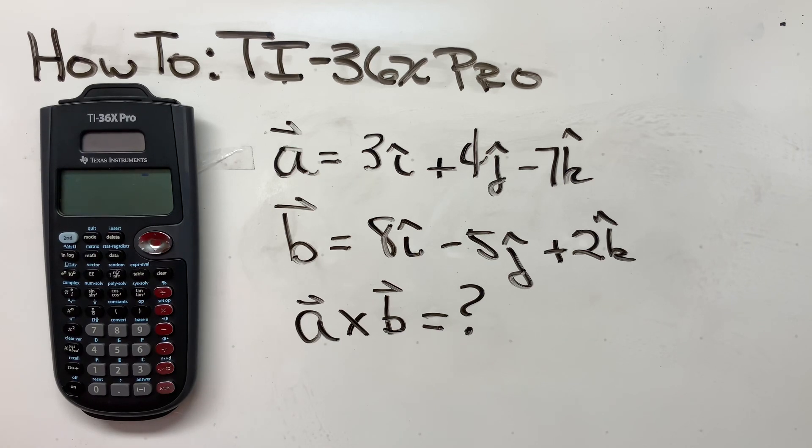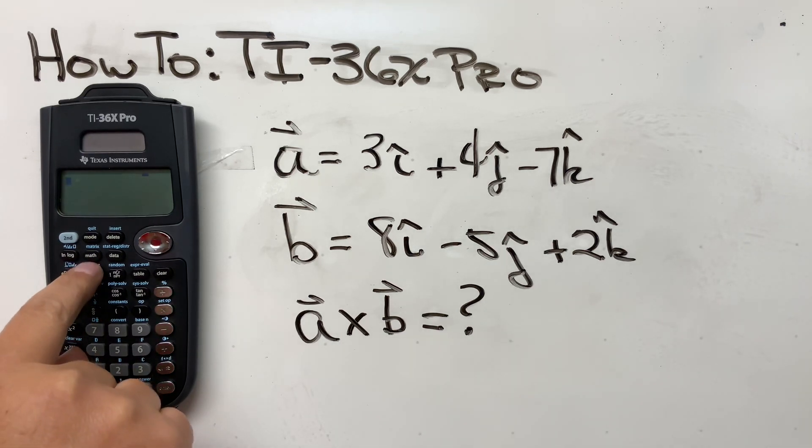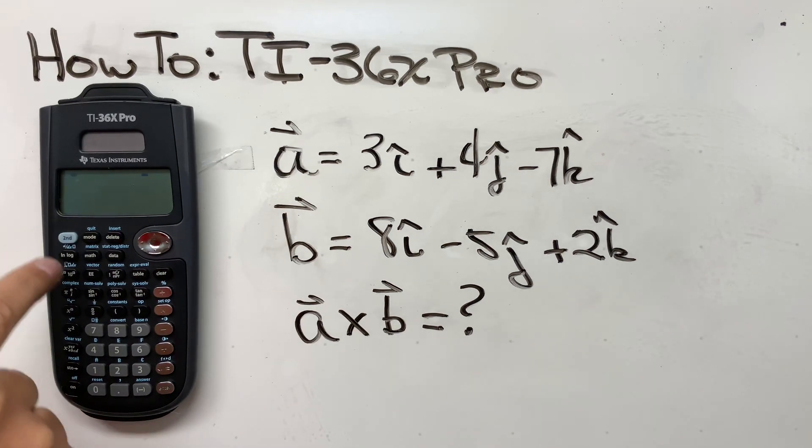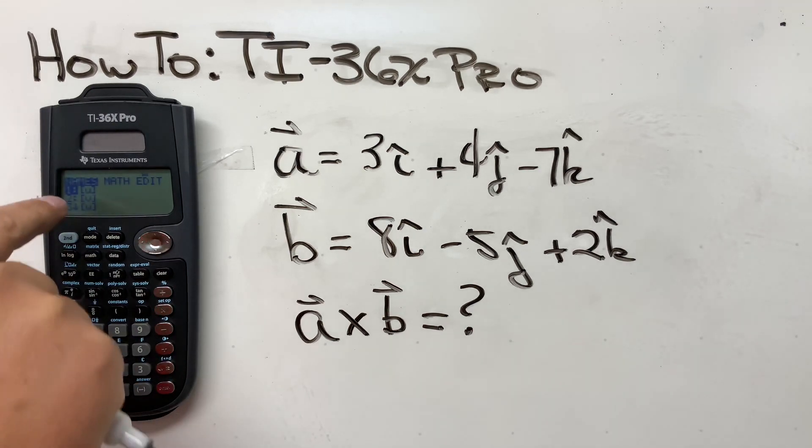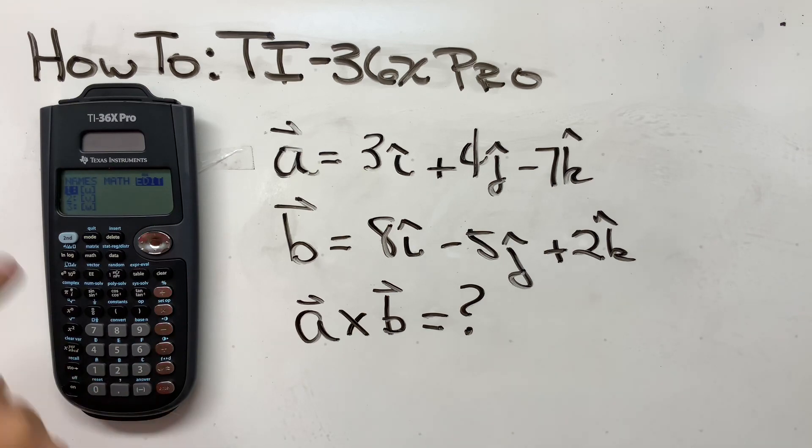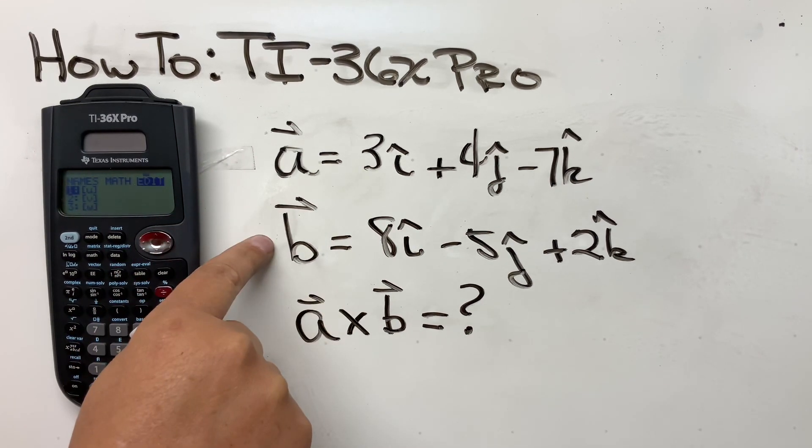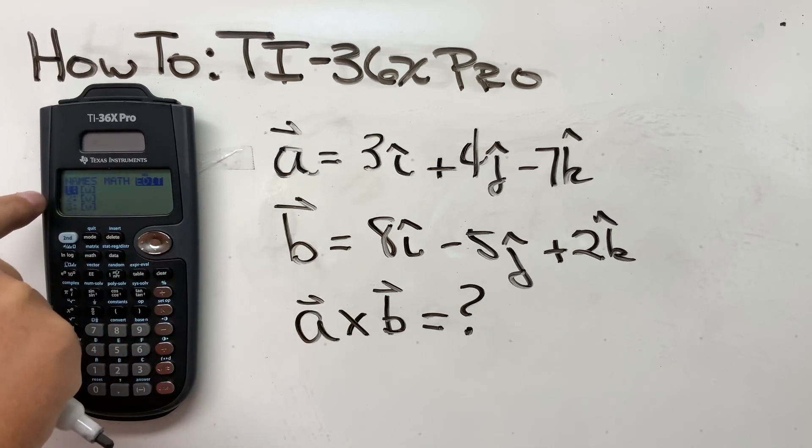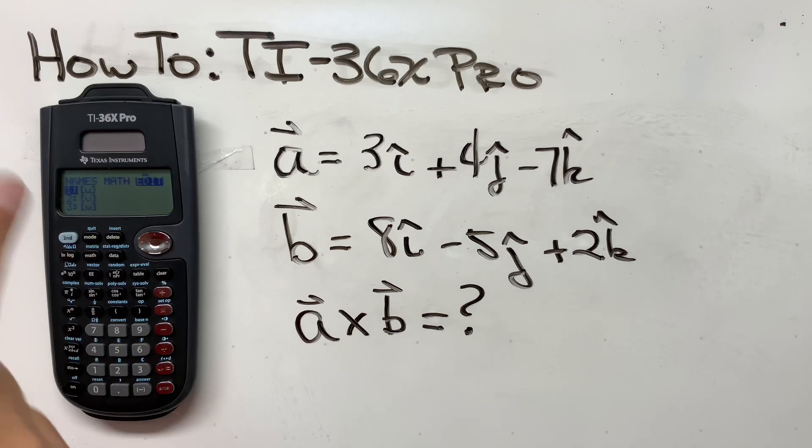So there's a couple ways to do this, and today we're going to do this using the vector function. Step one is to look at the vector function. So we're going to second vector, and then we've got to edit. Go over here to edit. And then we're going to edit U and V. This is going to be our U. This is going to be our V. You can call them whatever you want. So no matter what you're crossing here, it gives you the option for three different vectors. We're going to do two.